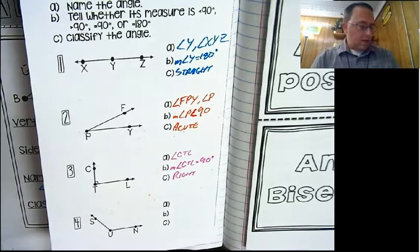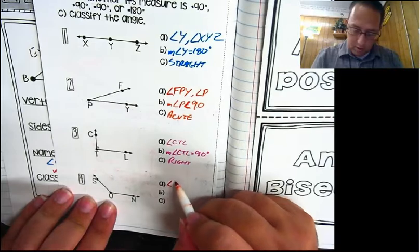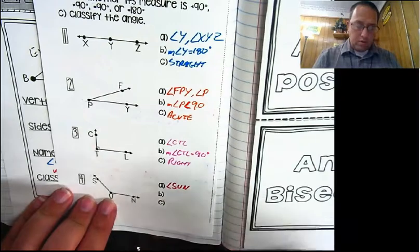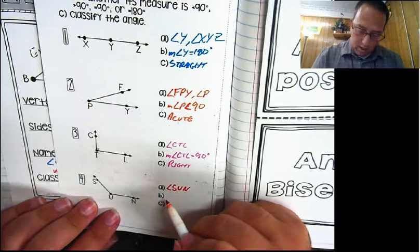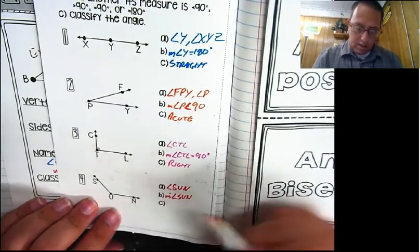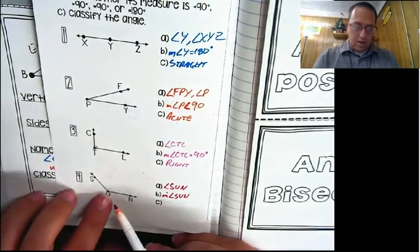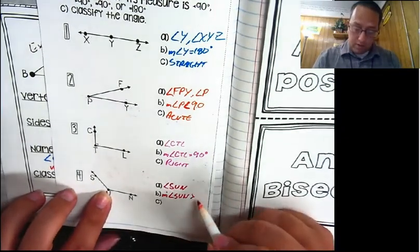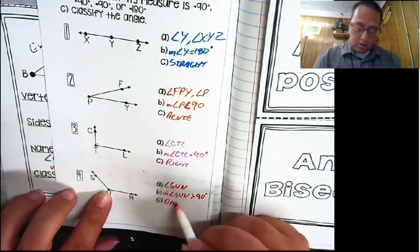Last one: angle SUN, NUS, or angle U. The measure of angle SUN - it's not a straight line and not a right angle. We look at it and see it is bigger than a right angle, so this is greater than 90 degrees, making it obtuse.